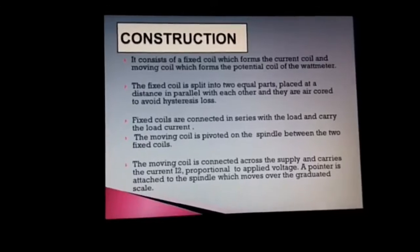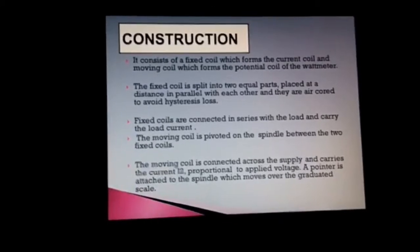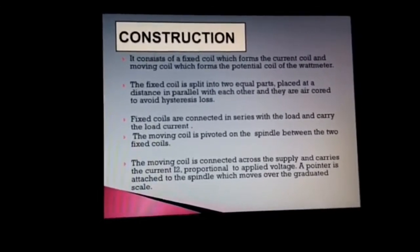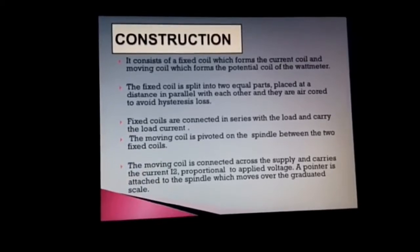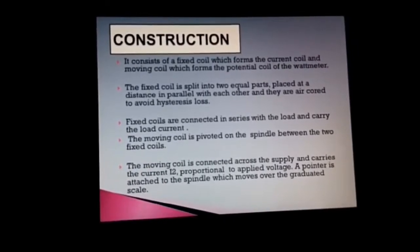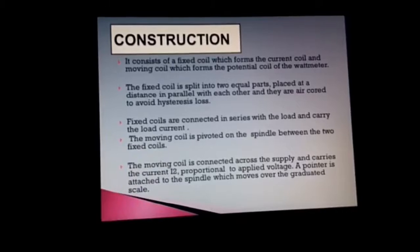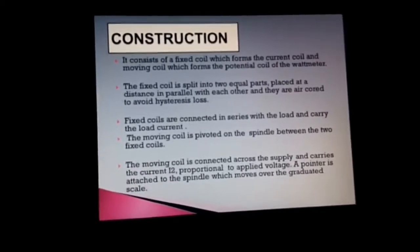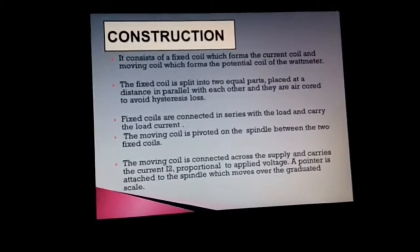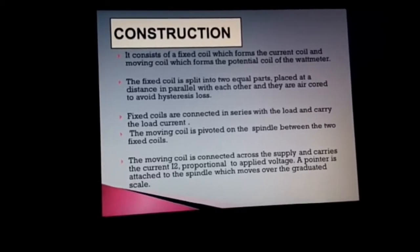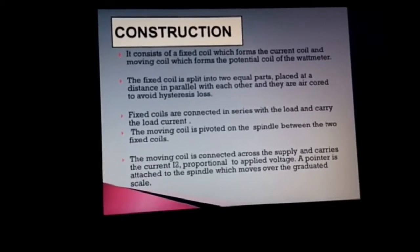Construction: It consists of a fixed coil which forms the current coil, and a moving coil which forms the potential coil of the wattmeter. The fixed coil is split into two equal parts placed at a distance in parallel with each other, and they are air-cored to avoid hysteresis loss. Fixed coils are connected in series with the load and carry the load current.